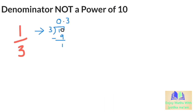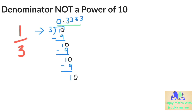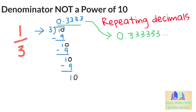Adding another 0, we do this again. 3 goes into 10, 3 times. 3 times 3 is 9, and the remainder becomes 1 again. At this point you might notice that we are going to get 3 over and over. This is an example of a repeating decimal. As our answer we write 0.3 with a line over the 3, as this represents a repeating number.